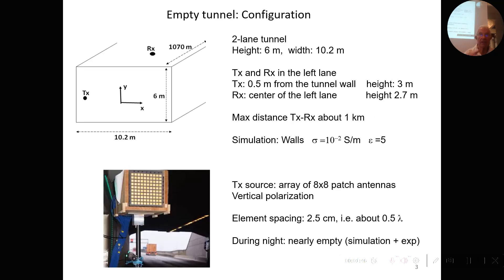The configuration is a rectangular road tunnel. The maximum distance between transmitter and receiver is about one kilometer. In the simulation, the conductivity of the walls is assumed to be 10 to the minus two Siemens per meter and a permittivity of five. The transmitting array is an array of 64 patch antennas with vertical polarization.